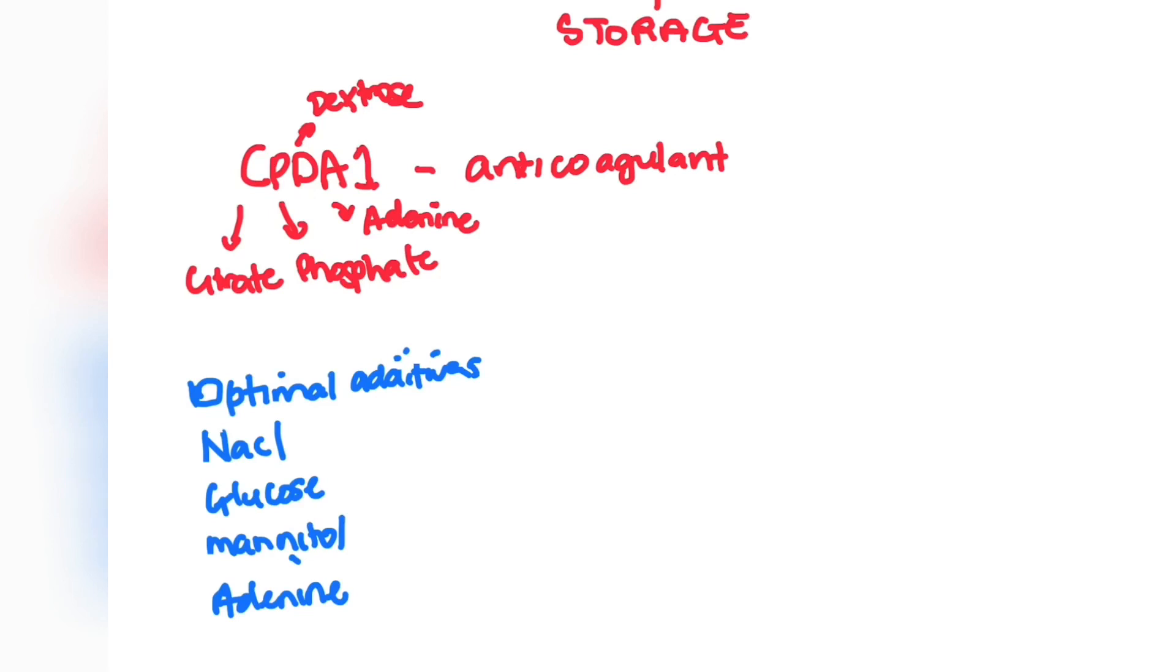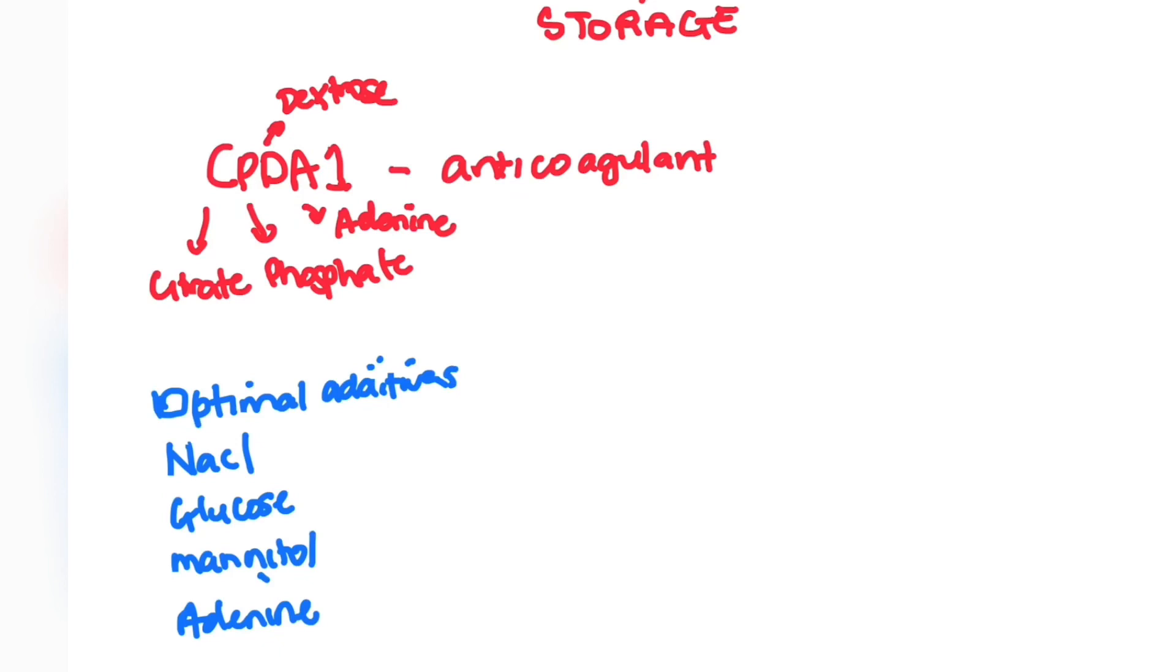This collecting bag and CPDA-1 anticoagulant consists of citrate, phosphate, dextrose, and adenine. It's important for you to know the function of these. Citrate prevents coagulation by getting rid of the calcium. Phosphate acts as a buffer to control a decrease in pH. Because there's going to be glycolysis and the buildup of lactic acid, the acidity can be dangerous for the blood cells, so the phosphate is there to buffer it to ensure that the pH is kept at a normal pH. The dextrose supports ATP generation via glycolysis, and adenine is a substrate for ATP synthesis.